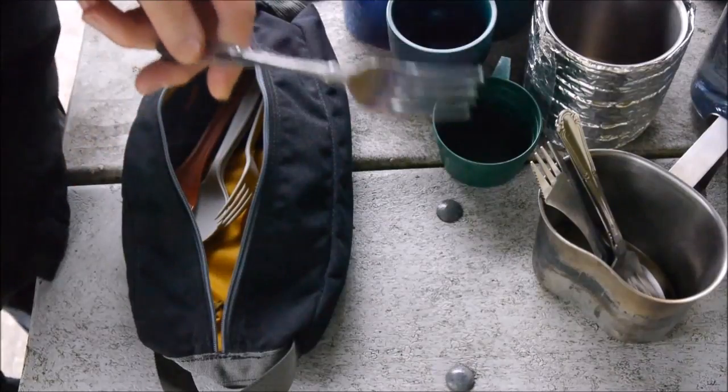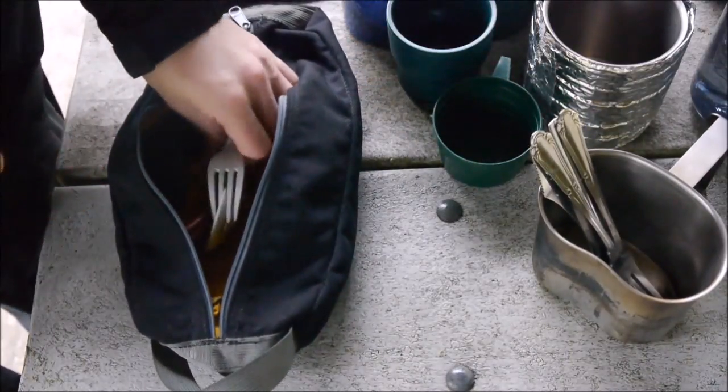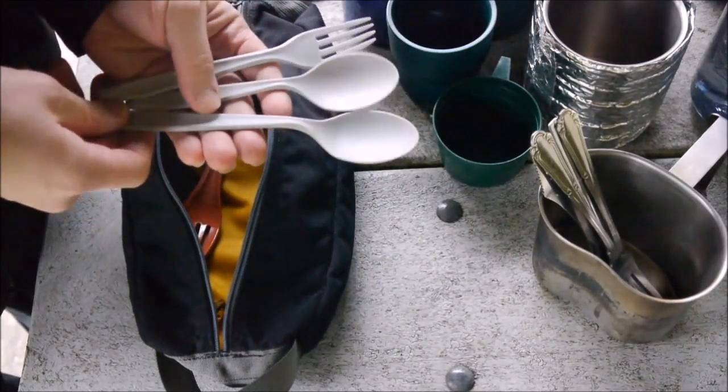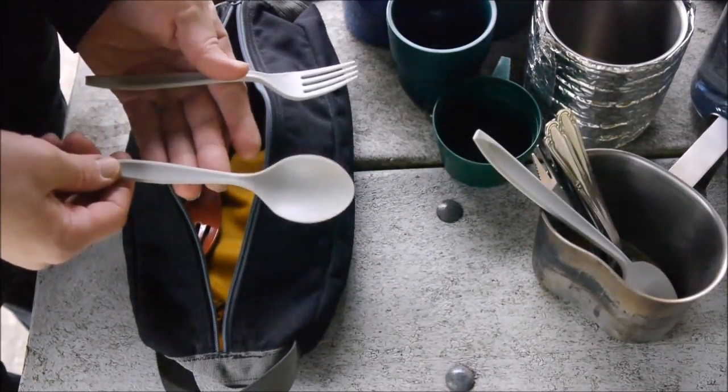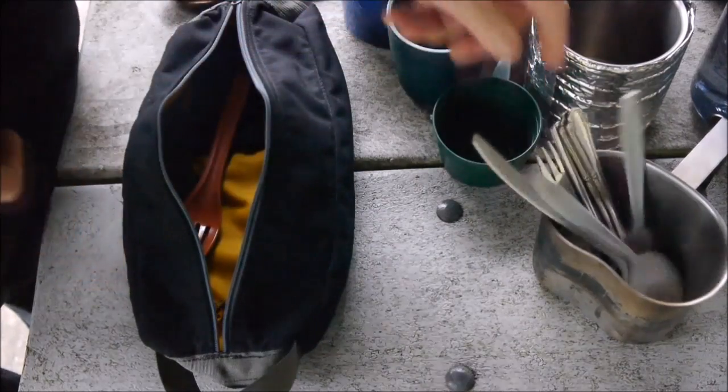And I have, apparently I threw an extra fork in there for no reason. Then I have the plastic Lexan. So I get the long one for mountain house meals. Just a spoon and a fork which I'll use from time to time.